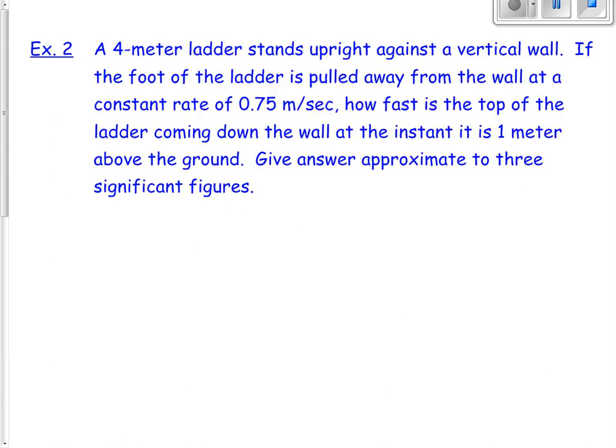Let's look at another example. We have a four-meter ladder standing up against a wall. The foot of the ladder is pulled away from the wall at a constant rate of 0.75 meters per second. How fast is the top of the ladder coming down the wall at the instant it is one meter above the ground? Give answer approximate to three significant figures.